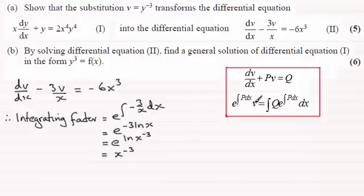So all we need to do is substitute it in here. And therefore what we've got is the integrating factor, which is now x to the power minus 3 times v is equal to the integral of q. q, remember, is this function of x minus 6x cubed. And then we multiply it by the integrating factor, which we found out was x to the power minus 3.